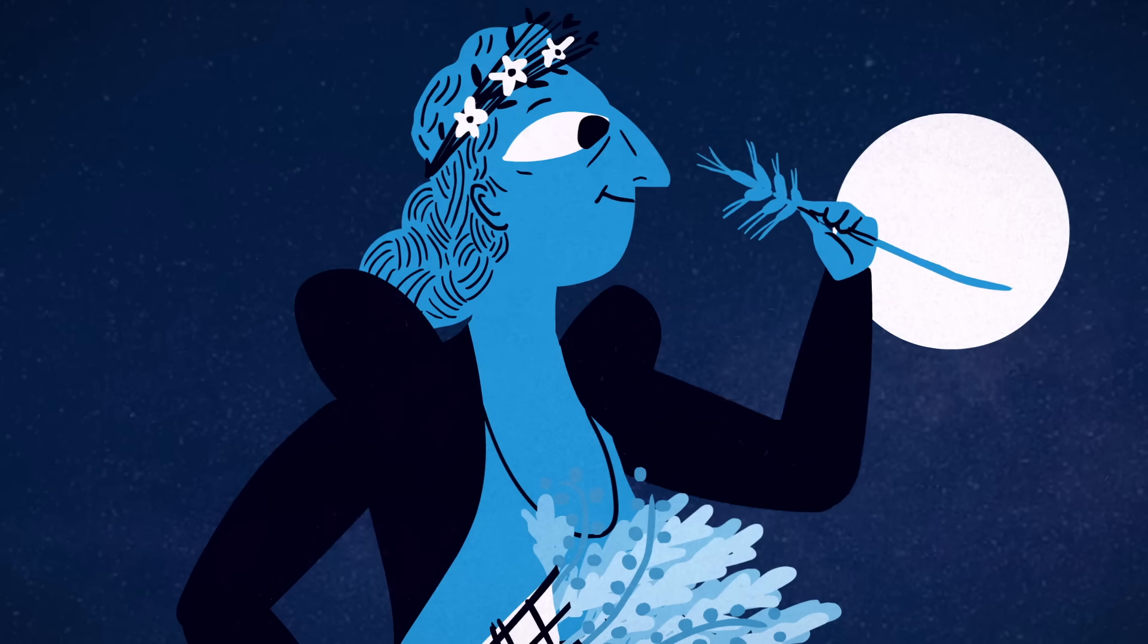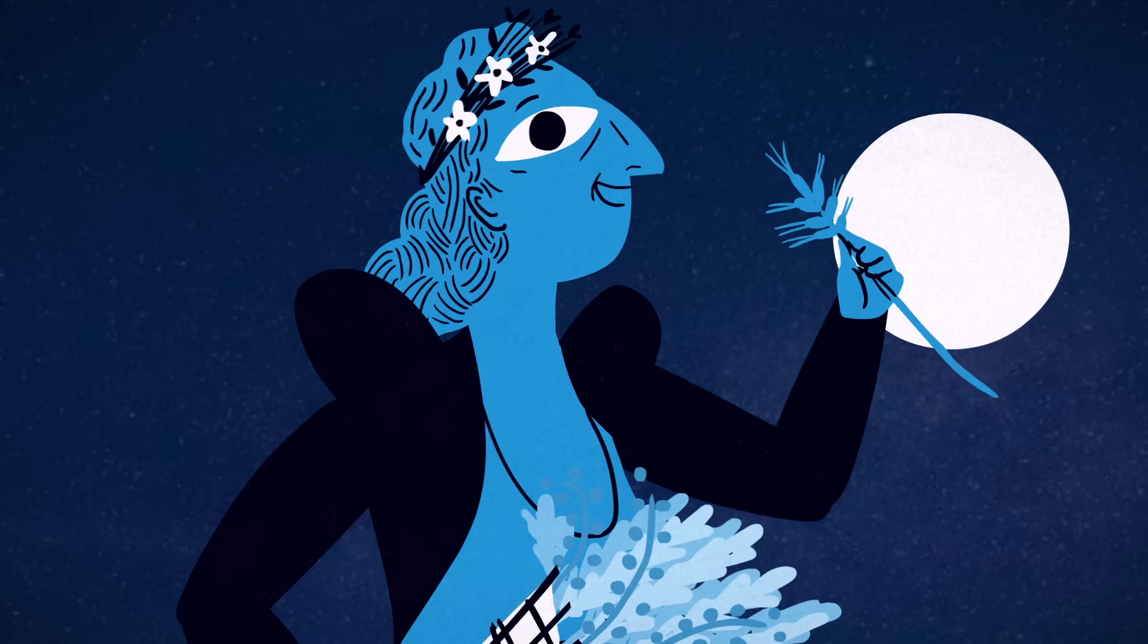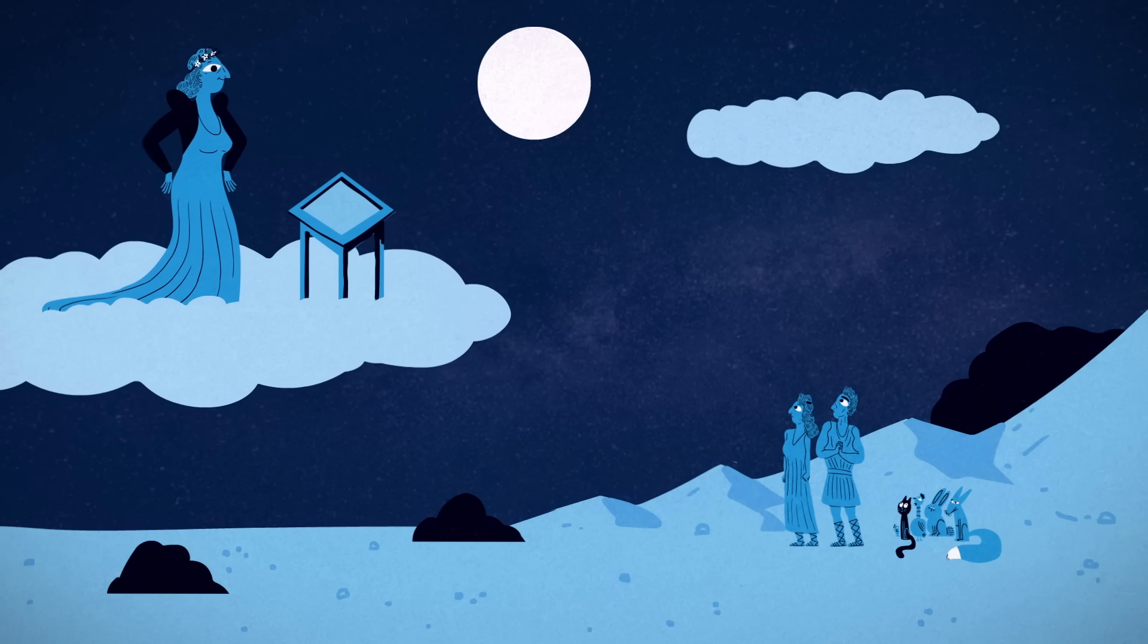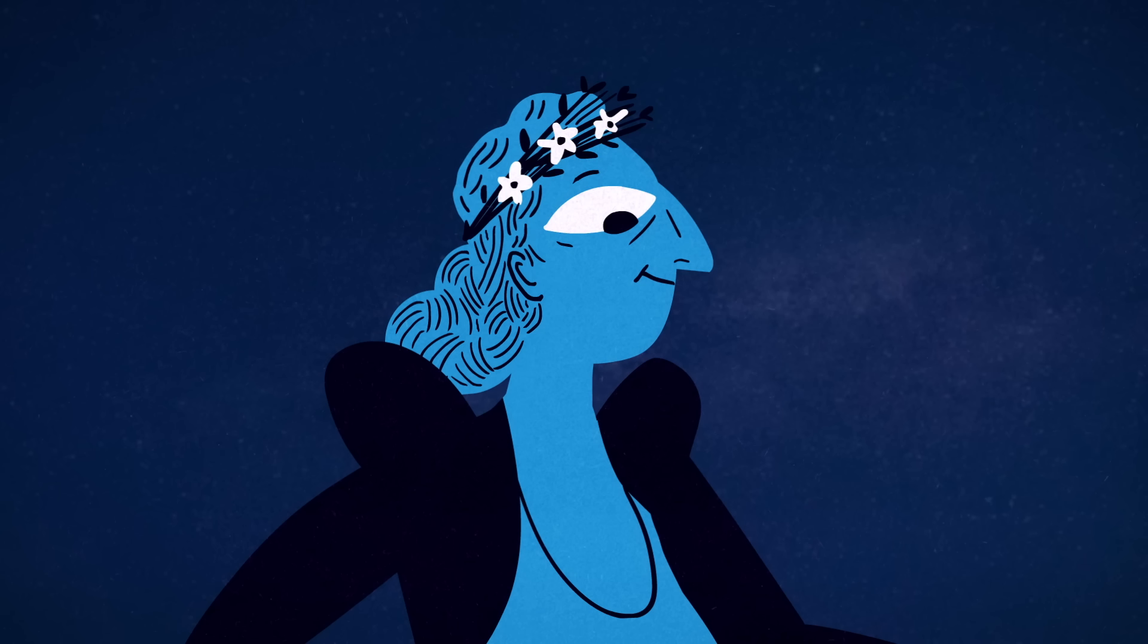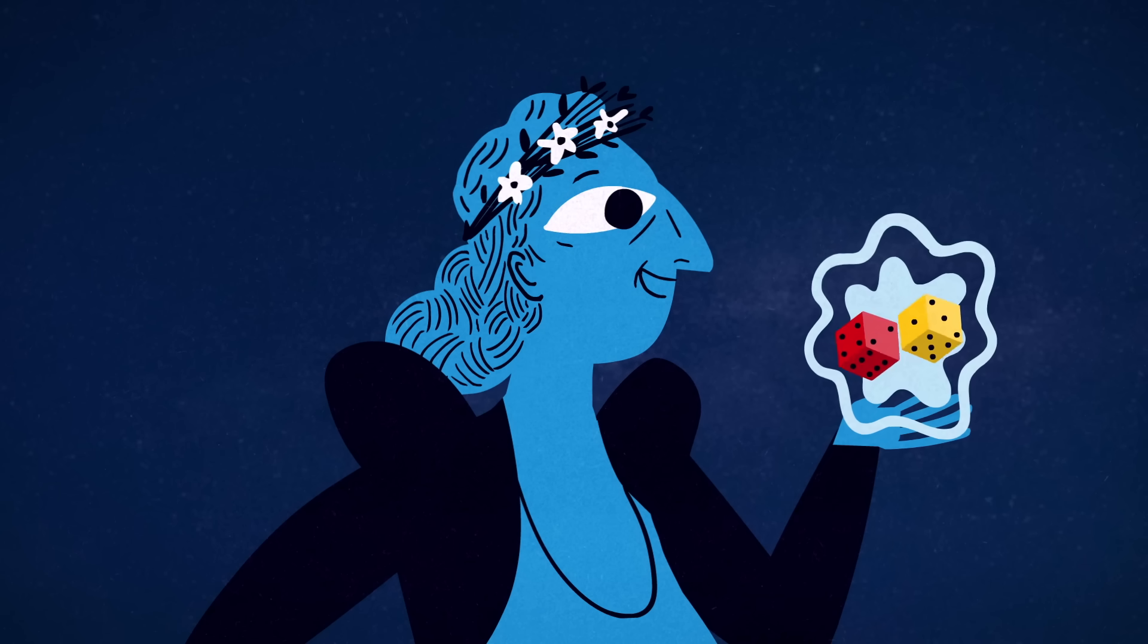As Demeter, Goddess of the Harvest, it's your favorite season. Humans and animals look to you to balance the bounty of the natural world, which, like any self-respecting goddess, you do with a pair of magical dice.